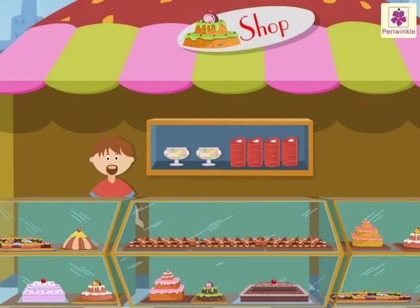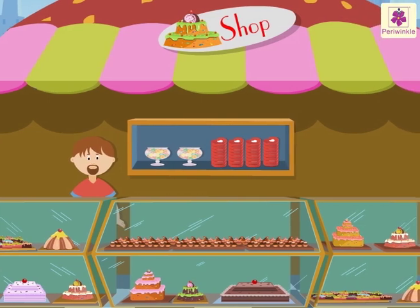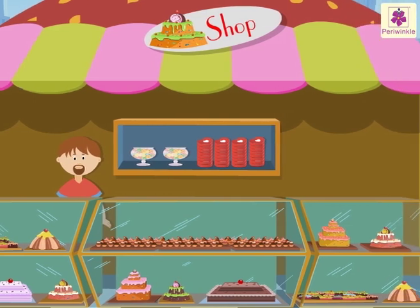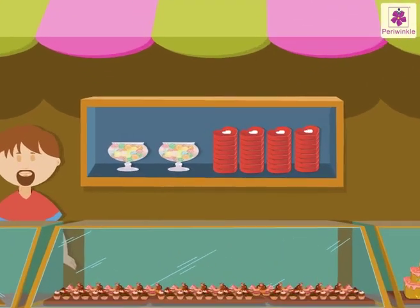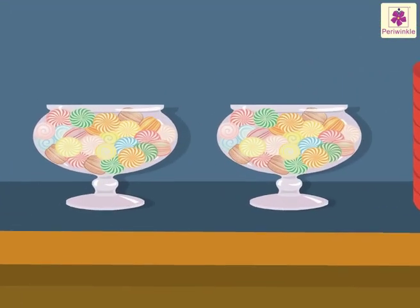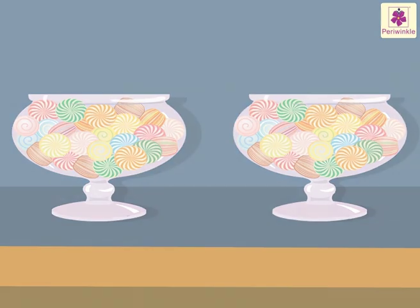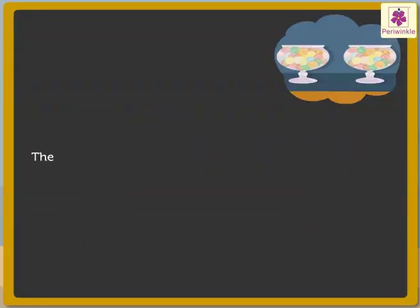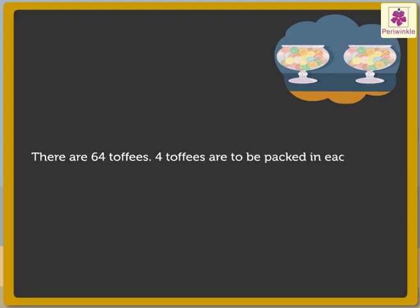Look where are we? Yes, it is a cake shop! Why not have some fun here and also learn how to solve division story problems? Look, there are 64 toffees. Four toffees are to be packed in each box.